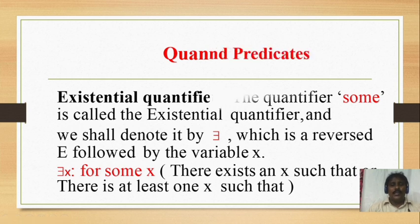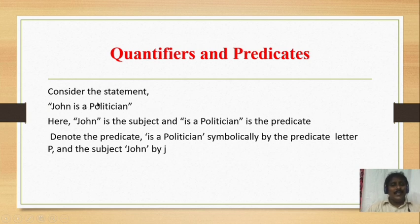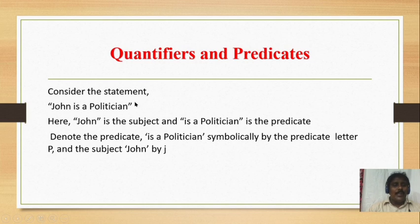Now we will see some examples. Consider the statement 'John is a politician.' Here, John is the subject and 'is a politician' is the predicate. So by this simple example we can easily identify what is a predicate and what is a subject. We denote the predicate 'is a politician' symbolically by the predicate letter t, and the subject John by j.